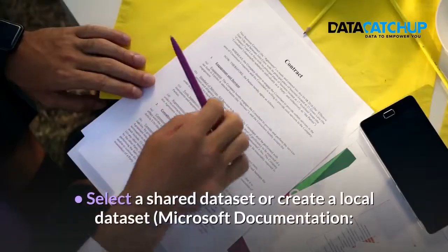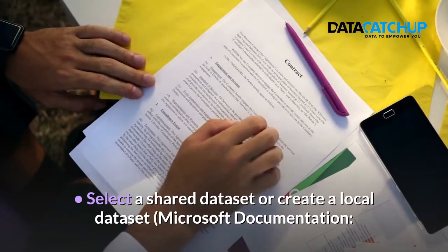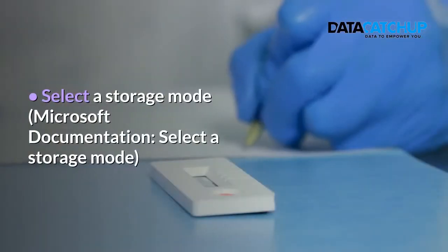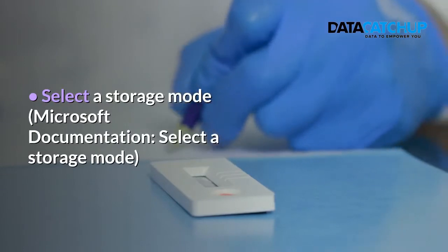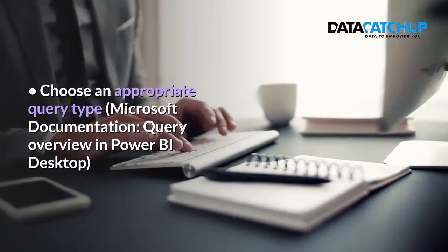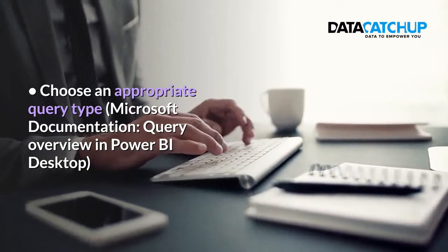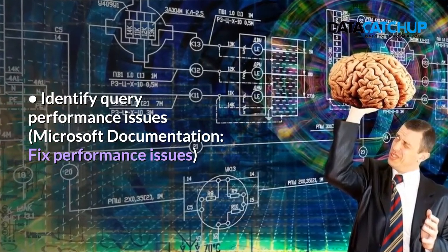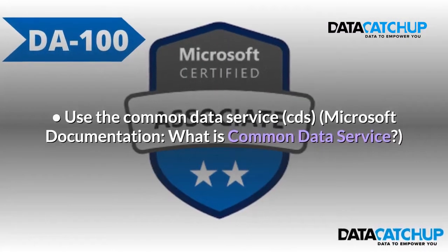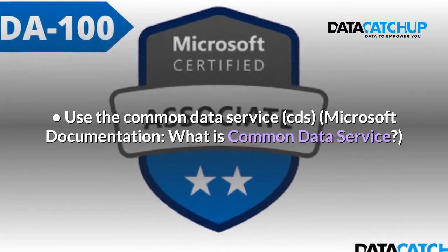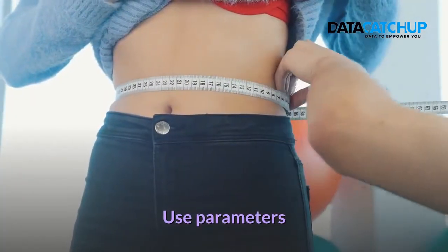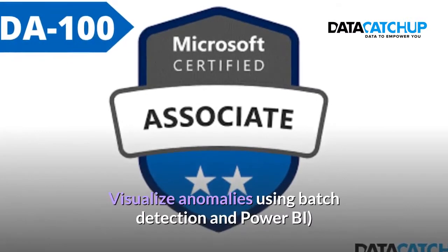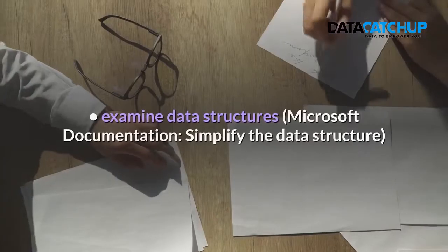Get data from different data sources. Identify and connect to a data source — Microsoft documentation: Data Sources and Power BI Desktop. Change data source settings — Microsoft documentation: Manage Data Sources. Select a shared dataset or create a logical dataset — Microsoft documentation. Select a storage mode — Microsoft documentation: Select a Storage Mode. Choose an appropriate query type — Microsoft documentation: Query Overview in Power BI Desktop. Identify query performance issues — Microsoft documentation: Fix Performance Issues. Use the Common Data Service. Use parameters.